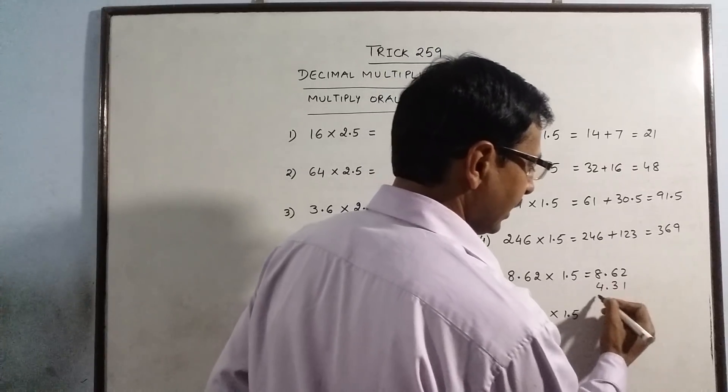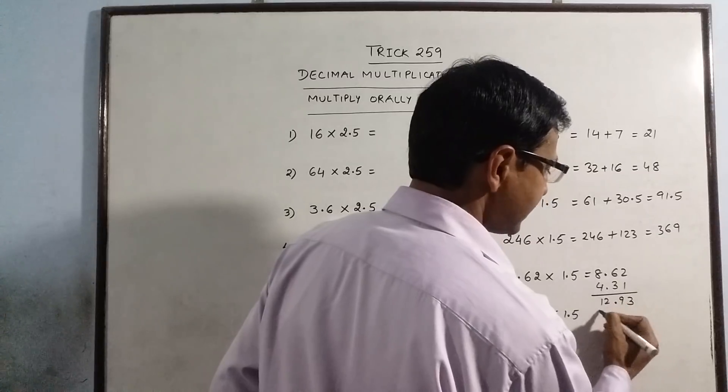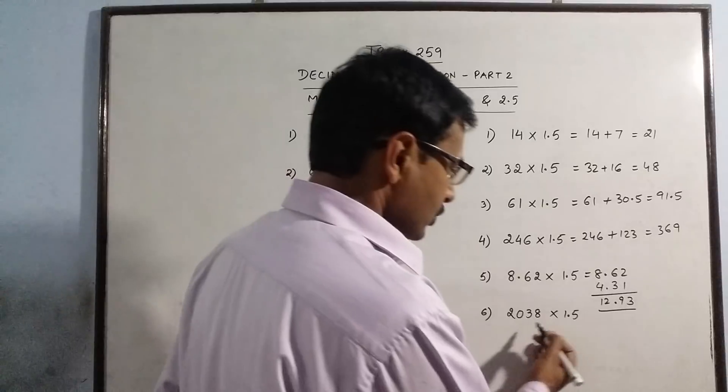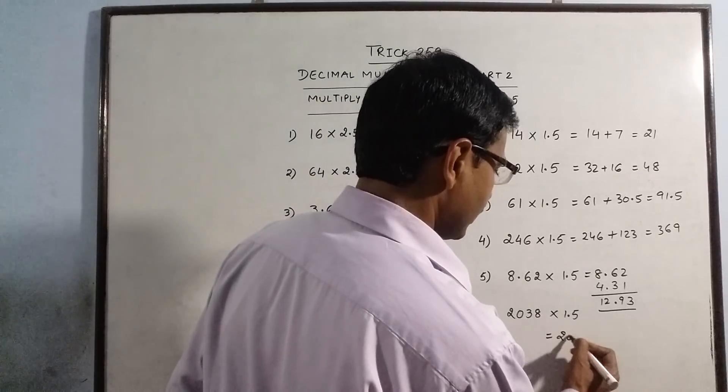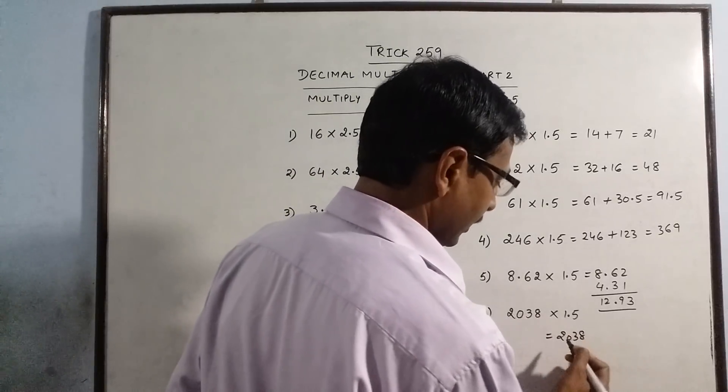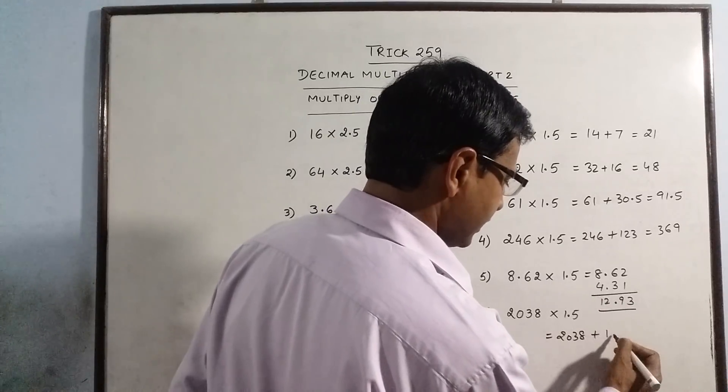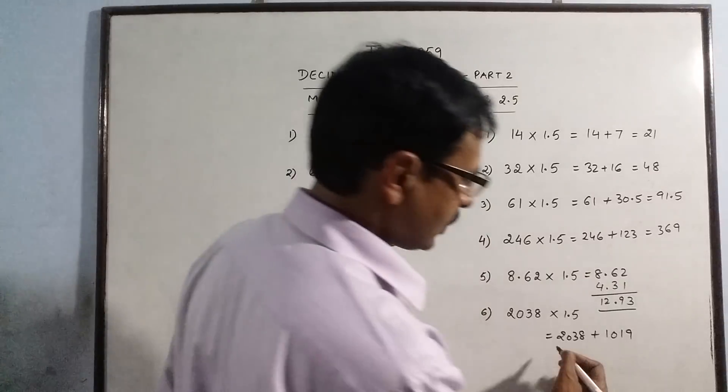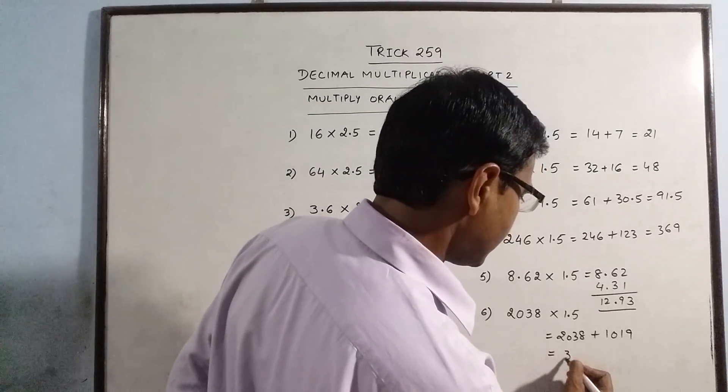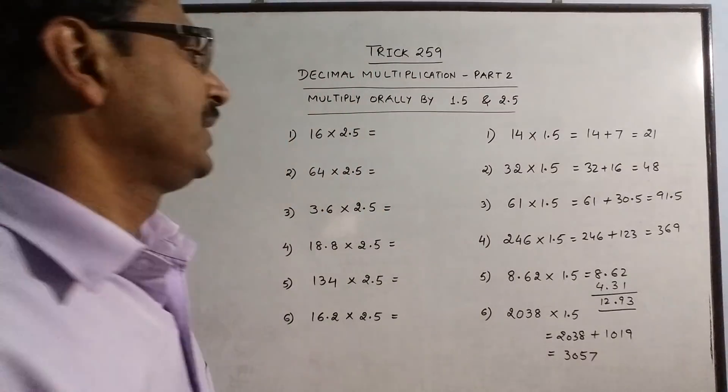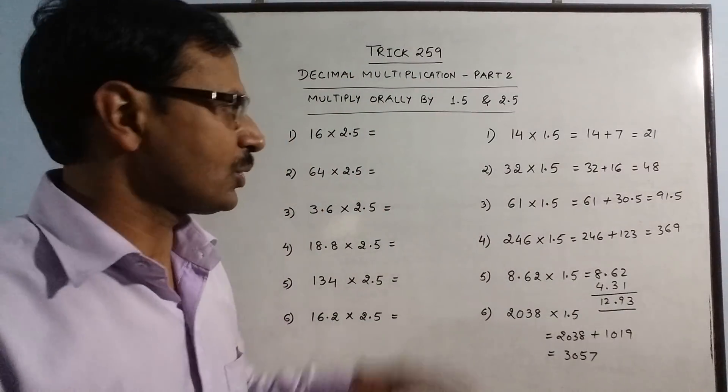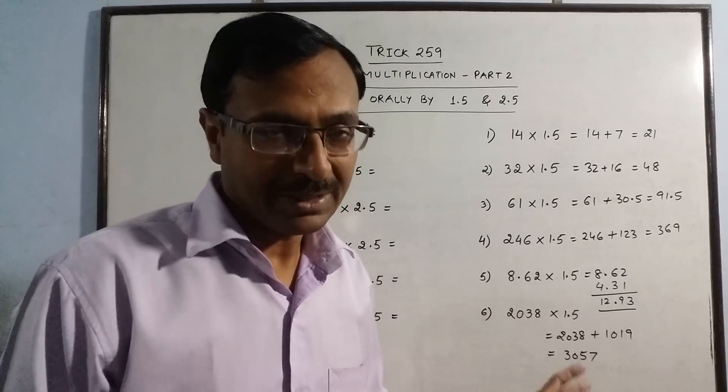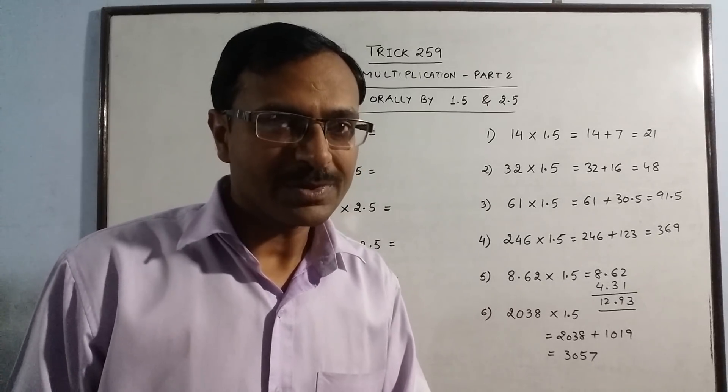Add them, you get your final answer is 12.93. 2038 times 1.5: so 2038 plus now half of this, 1019. The final answer which you get here is 3057. Now see how much time I have taken to solve these, and even when I am explaining it to you, I have taken very less time.